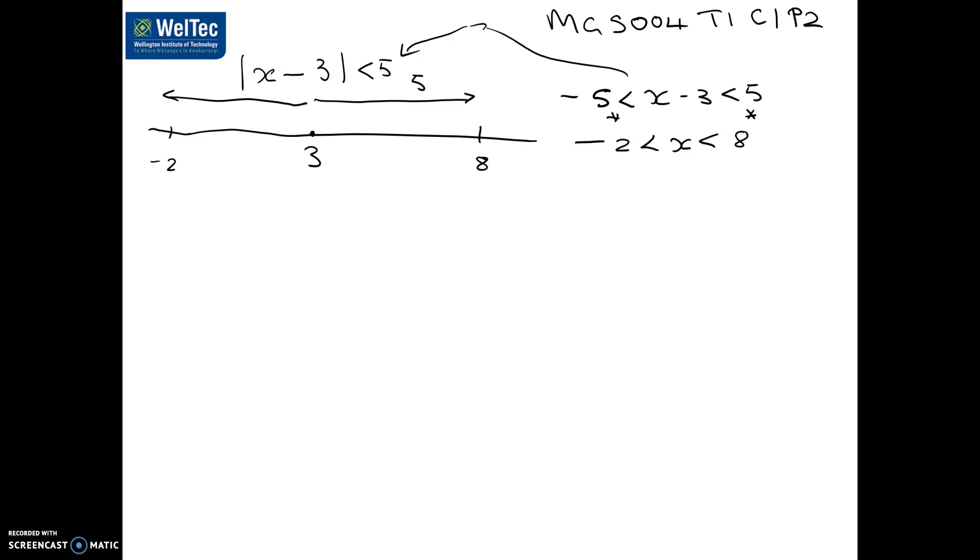We can write this as what we call an open interval. We're not including 2, and we're not including 8. So on my number line, I indicate that by open circles. It says I'm up to 8, but I'm just not quite including 8.